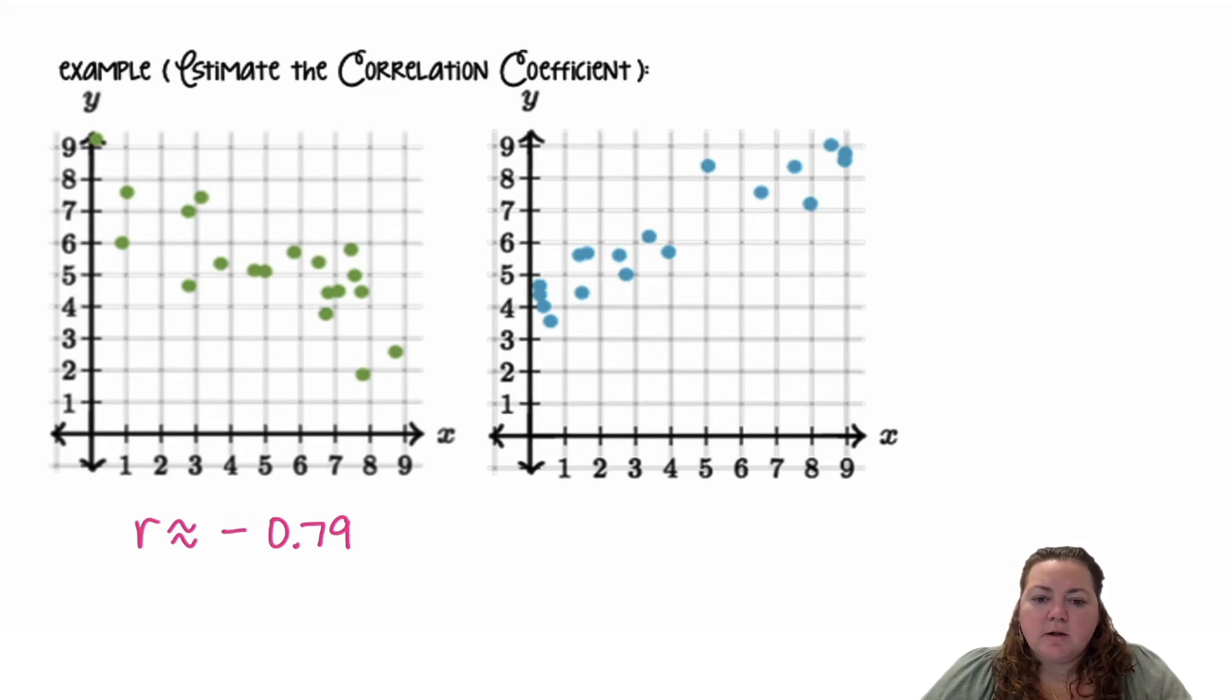And then the other one is going up, it's positive. They look like they're a little bit more tightly packed together than the other green dots. So I'm going to say R is about 0.94.